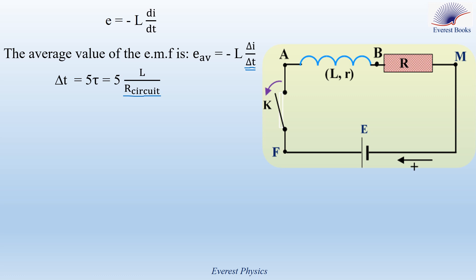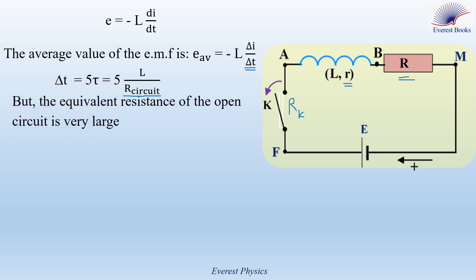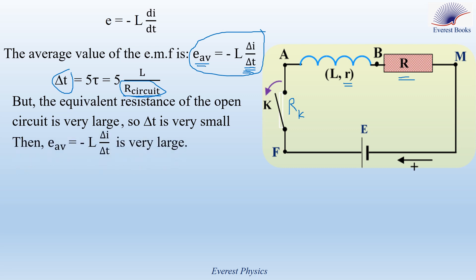The equivalent resistance of the circuit equals the sum of the resistance R of the resistor, the internal resistance of the coil, and the resistance of the open switch. But the resistance of the open switch is very large, so the equivalent resistance of the open circuit is very large. If R_circuit is very large, then delta t is very small. And if delta t is very small, then E_average is very large.